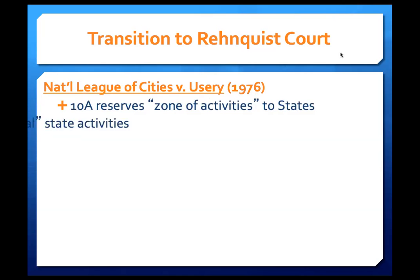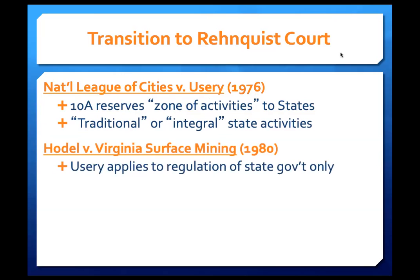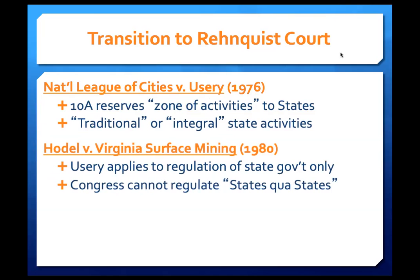We also mentioned how the court decided a case in 1985, the Garcia case, where it said the National League of Cities decision applies only to regulation purely of state government. It gives us the idea that Congress cannot regulate what they call states qua states — states being states, states acting as states. That's the activity we are trying to isolate and say is protected from congressional regulation.